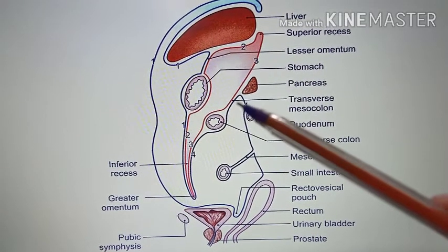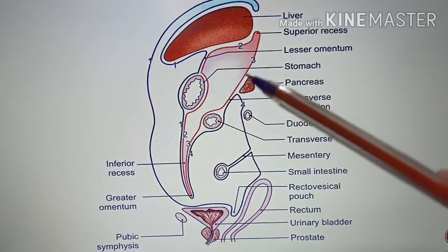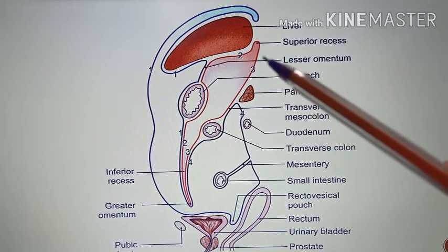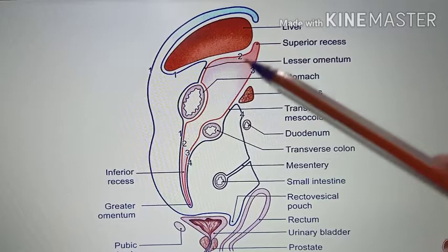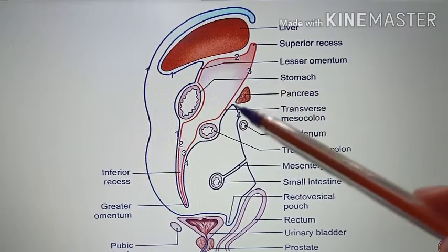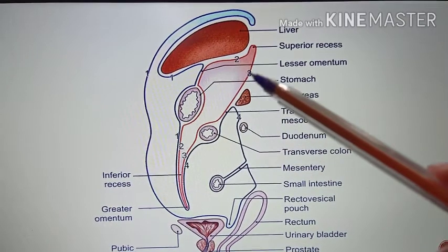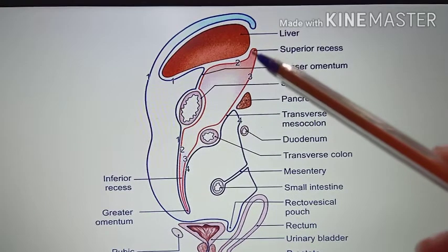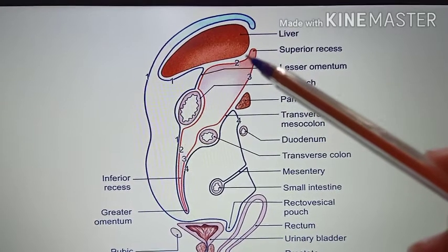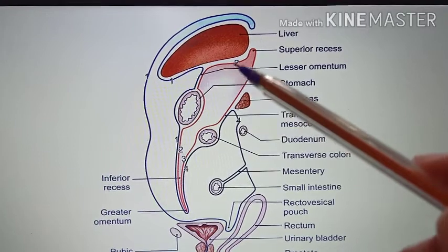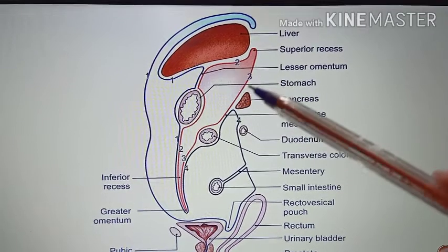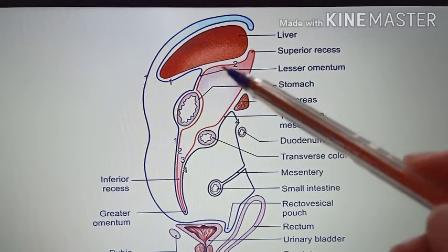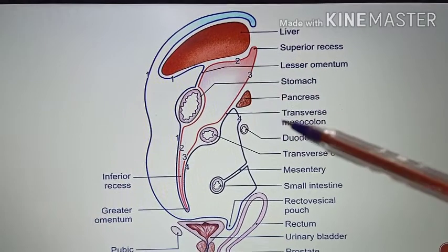The third layer lines the structures in the upper part of the posterior abdominal wall. This upper part of the posterior abdominal wall is lined by the third layer, and later it gets reflected onto the liver as the second layer.